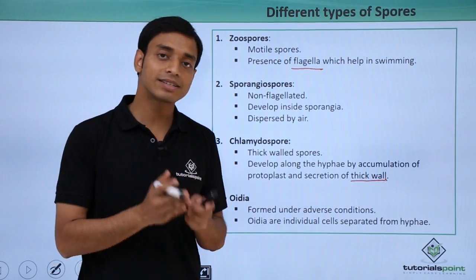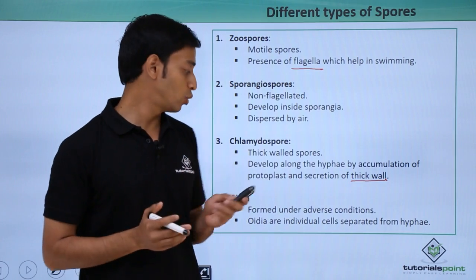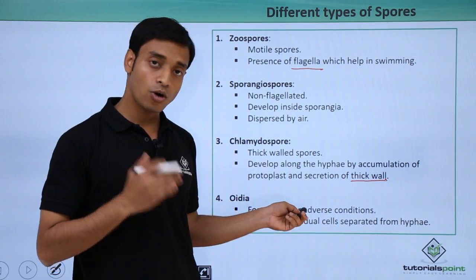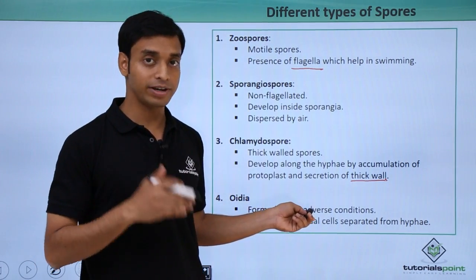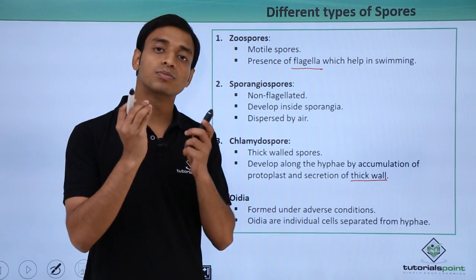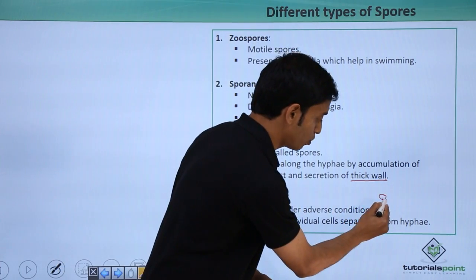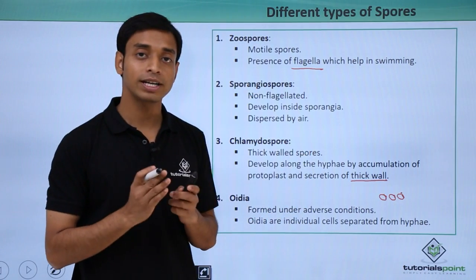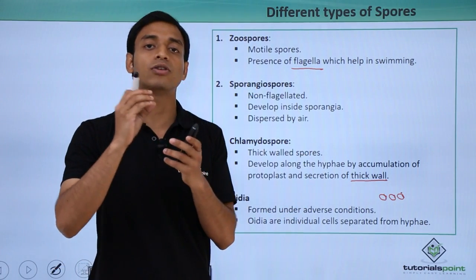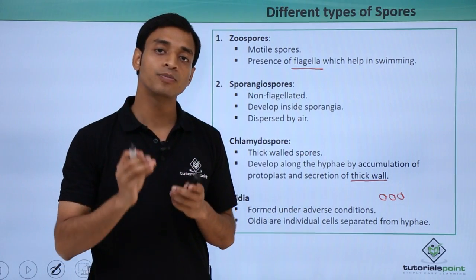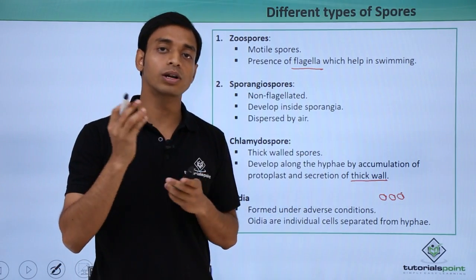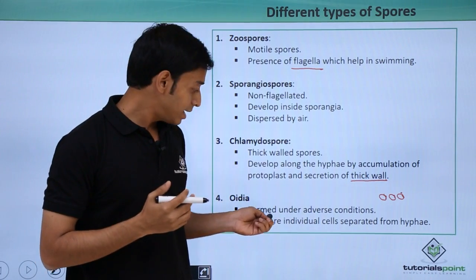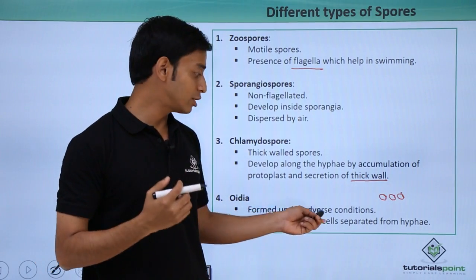The next type of spore is called oidia. These are formed under very adverse conditions and are small yeast-like cells. The hyphae form these small circular or oval yeast-like cells, which are termed oidia. They can individually give rise to a new organism and get separated from the hyphae.